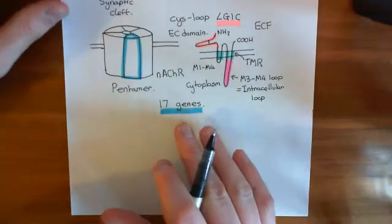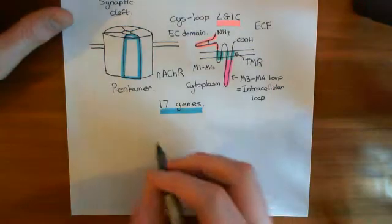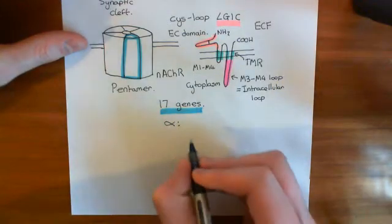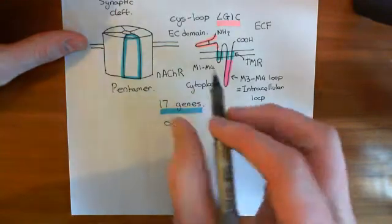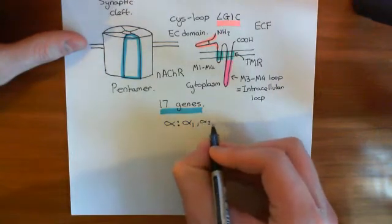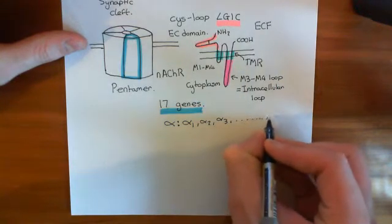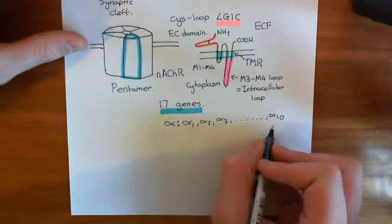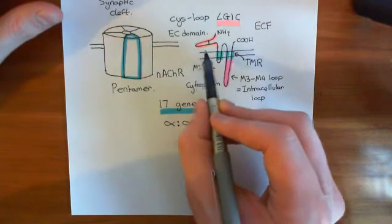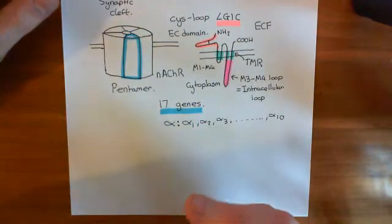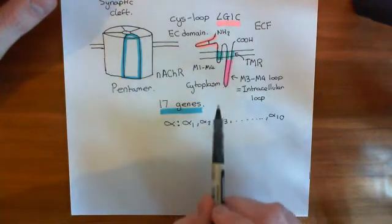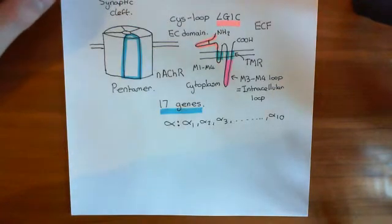To help us gain some understanding of this, they have grouped these 17 genes into different families. The first family is known as the alpha family, which contains 10 of the 17 genes: alpha 1, alpha 2, alpha 3, all the way up to alpha 10. These are 10 separate genes which code for proteins that all have the same structure but differ slightly in their amino acid sequences. You can therefore build an alpha 1 through to an alpha 10 nicotinic acetylcholine receptor subunit.